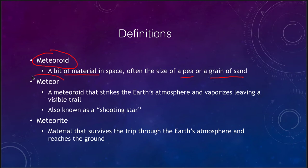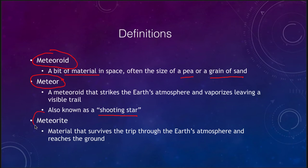When a meteoroid strikes the Earth's atmosphere, it can become a meteor. We also call this a shooting star. It is the meteoroid that strikes the Earth's atmosphere and vaporizes, leaving a trail that we can actually see. When you see a shooting star, it has nothing to do with a star — it has everything to do with small solar system debris burning up in the Earth's atmosphere. Finally, a meteorite is material that survives the trip through the Earth's atmosphere and lands on the ground, so it can actually be studied.